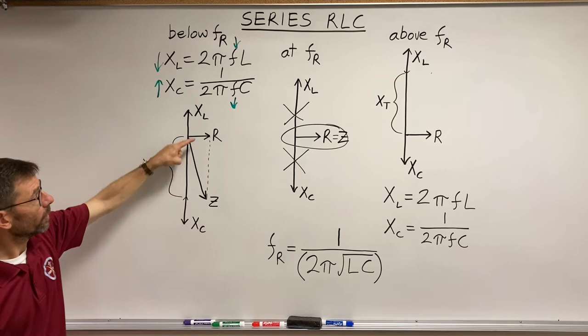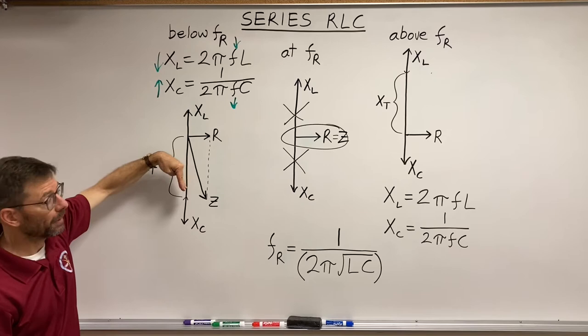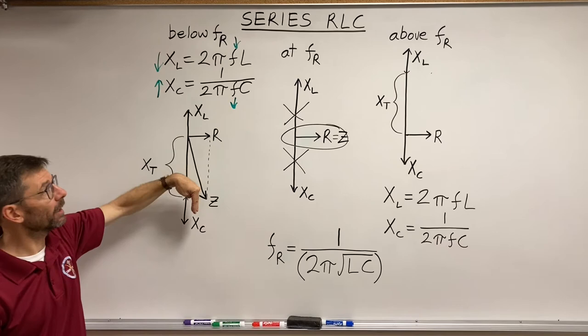So here, below resonance, my Z got bigger than it had been. At resonance, it had been small, equal to the R. Here, it got bigger. What happens over there? If we take it above resonance?